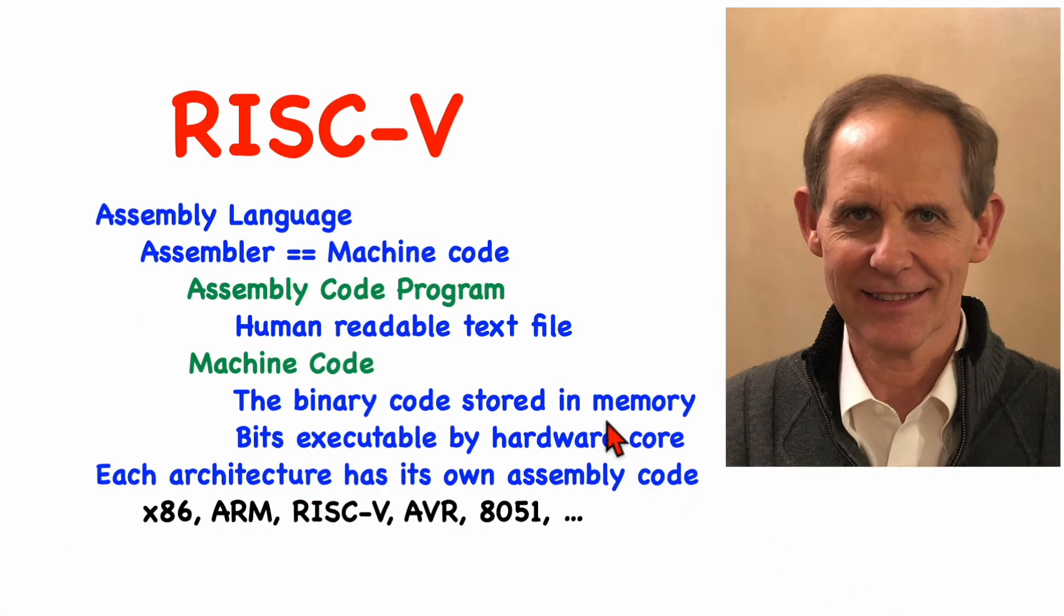I want to begin by making a distinction between assembly language and machine code. Machine code consists of the binary code, that is the bits, that are stored in the computer's memory, and these are the instructions that are executable directly by the hardware. Assembly code, on the other hand, is human-readable, and ideally there's a one-to-one correspondence between the machine code and the assembly language instructions. Now every architecture has its own machine code, and therefore its own assembly language, and we're going to be focusing on RISC-V.